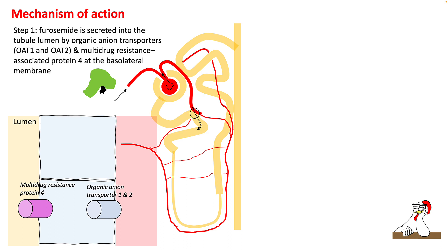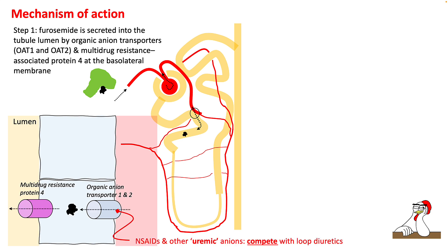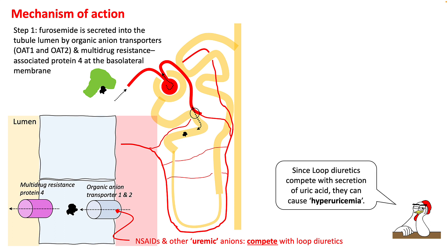Loop diuretics are actively secreted in your proximal convoluted tubule through organic anion transporter 1 and 2 (OAT1/OAT2) and multidrug resistance protein 4. This is important because the same channels are used to secrete NSAIDs and other uremic anions, so they compete with each other for this channel. This is one reason why hyperuricemia develops in patients on loop diuretics — because loop diuretics compete with uric acid in their secretion.